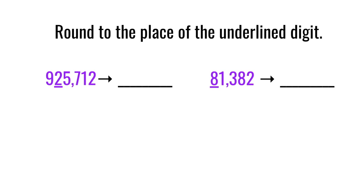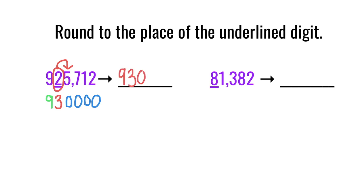Let's try two more. We have 925,712 and we want to round to the underlined digit, so we're going to circle that two and look next door. We have a five — the five has power, five or more add one more — so that two becomes a three. Everything after the circled digit becomes zero: the five, the seven, the one, and the two become zeros, and anything before stays the same always. So when rounded to the nearest ten thousand, this becomes 930,000.